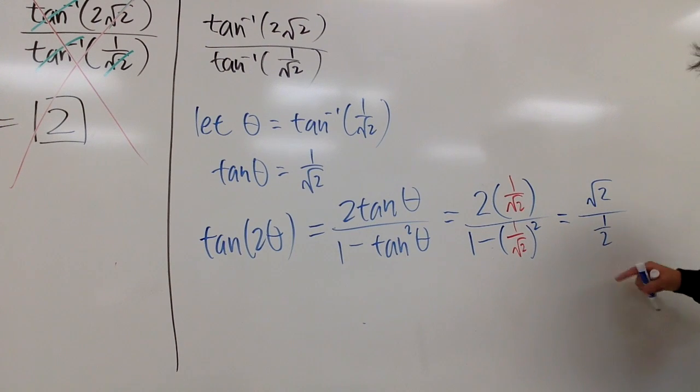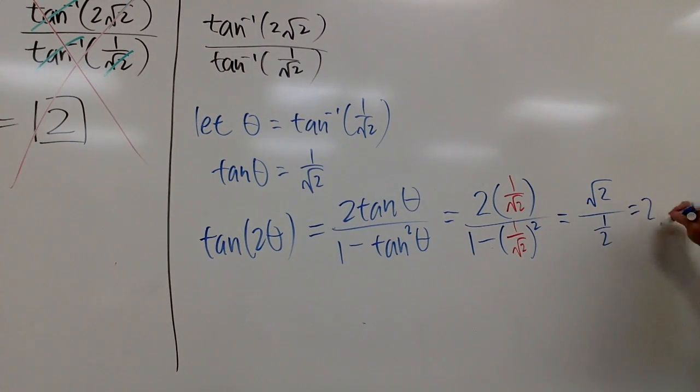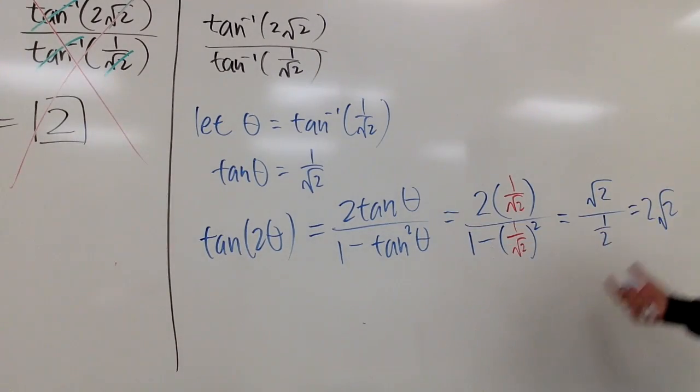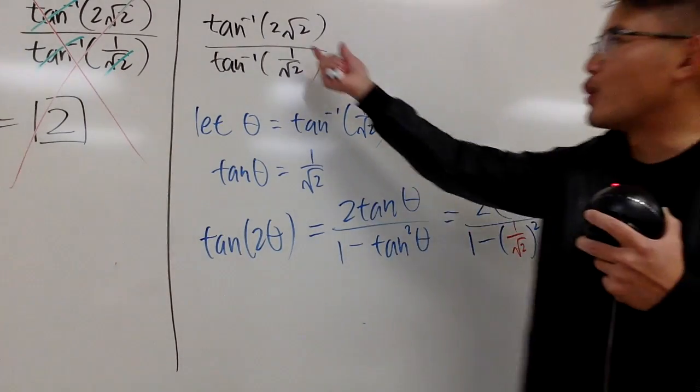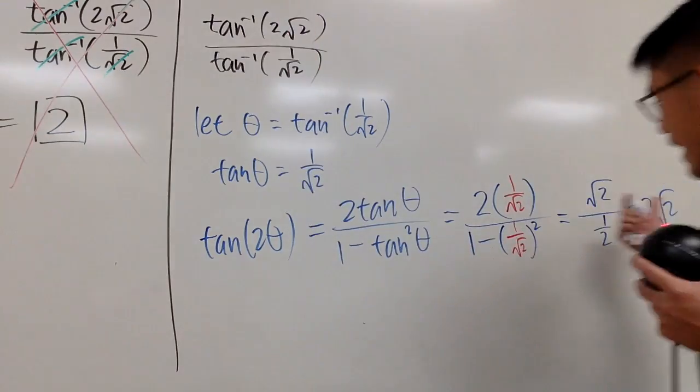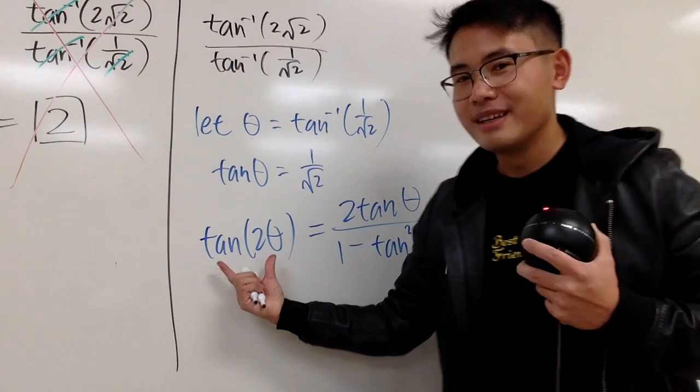And, when you have this over 1/2, it's the same as saying 2 times √2, like this. And, notice, 2 times √2, it's what we have right here inside. And, this right here came from tan(2θ).